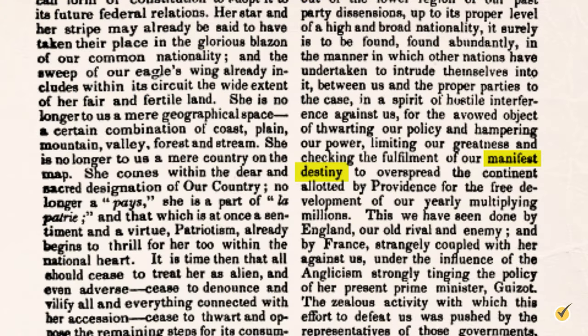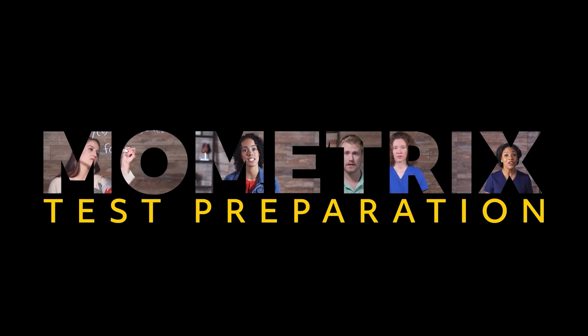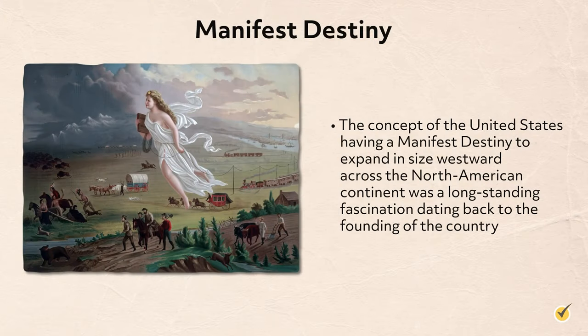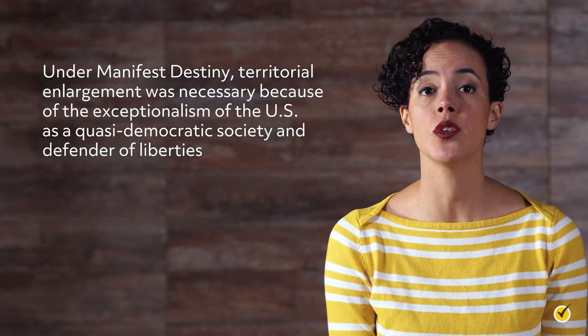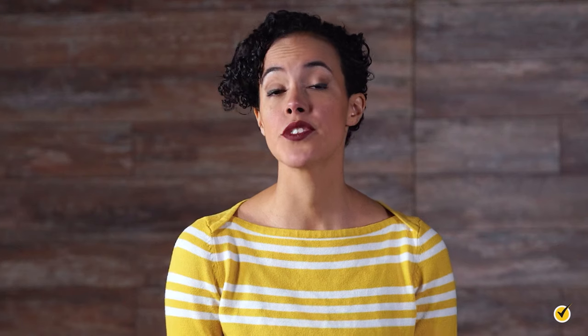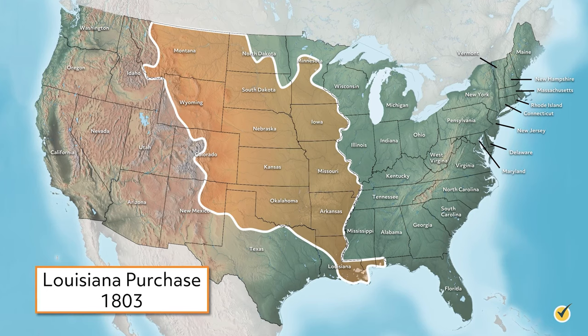The term Manifest Destiny, coined at a partisan newspaper in 1845, became synonymous with the ambition and scope of American territorial expansionism. The concept of the United States having a Manifest Destiny to expand westward across the North American continent was a long-standing fascination dating back to the founding of the country. Under Manifest Destiny, territorial enlargement was necessary because of the exceptionalism of the U.S. as a quasi-democratic society and defender of liberties. For a material beginning, we can look back to 1803, when Thomas Jefferson inked the Louisiana Purchase with Napoleon, doubling the territory of the U.S. overnight.